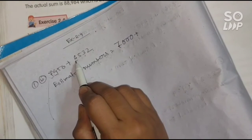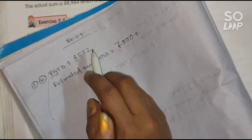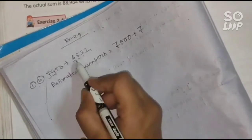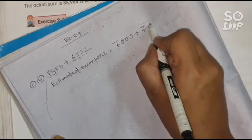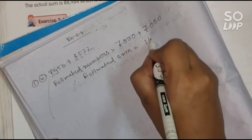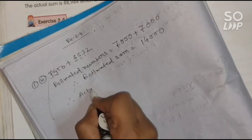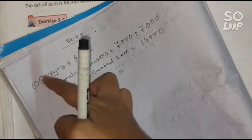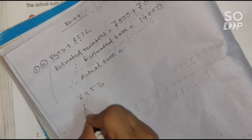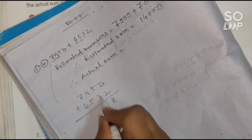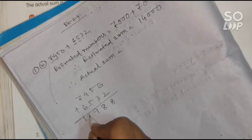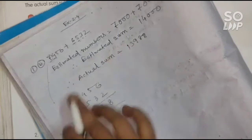For 76532, the thousand digit is 6. The next digit is 5, which is equal to 5, so we add 1 to 6, making it 7. After 6 there are 3 digits, so we place 3 zeros: 7000. The estimated sum is 7000 plus 7000, which equals 14,000. For the actual sum, arrange the numbers vertically in columns: 7456 plus 76532. Adding gives 8 plus 2 is 8 in ones — wait, 6 plus 2 is 8, 5 plus 3 is 8, 4 plus 5 is 9, and 7 plus 6 is 13. The actual sum is 83,988.